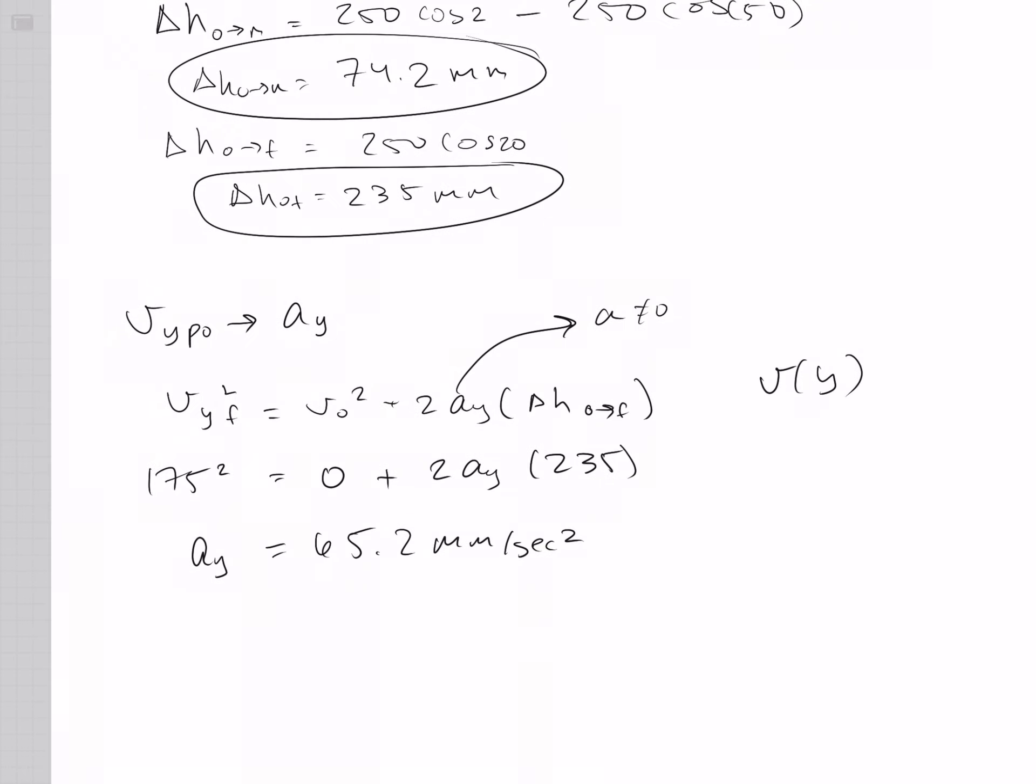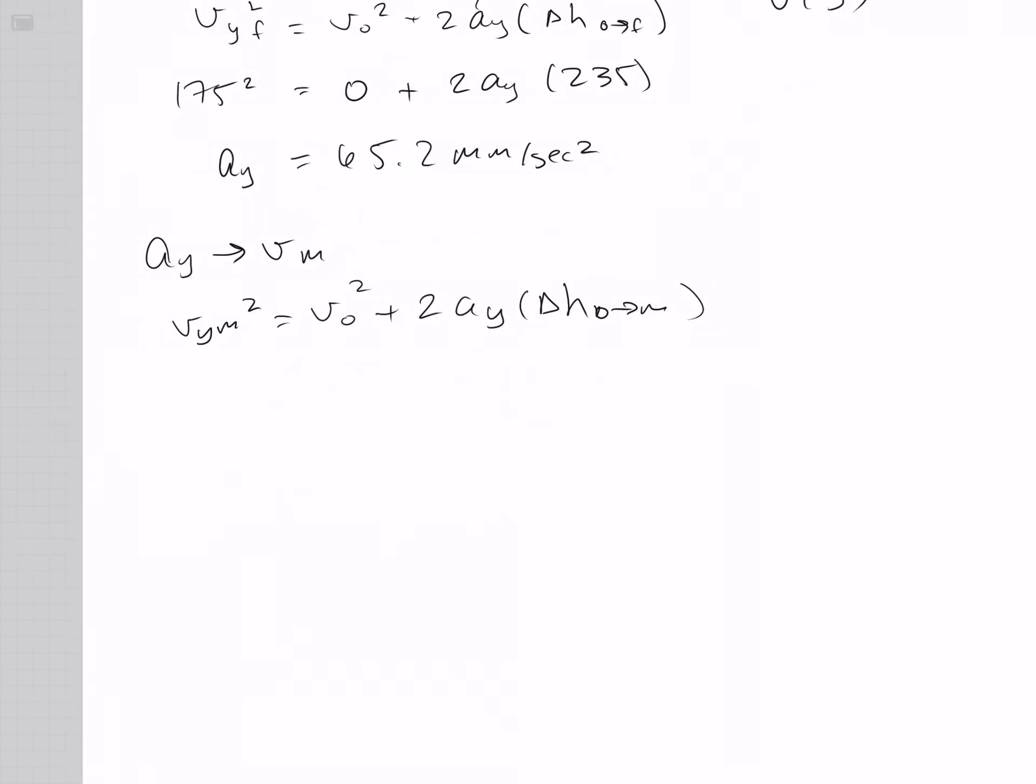Now, to go from A Y to velocity middle, we'll do the exact same thing, but putting the unknown for the middle velocity at the beginning, instead of the given final velocity. This is delta M from zero to M. And when you solve for—well, let's put in the variables there first, plus two, 65.2 times 74.2. And when you solve for that, it is 98.4 millimeters per second.